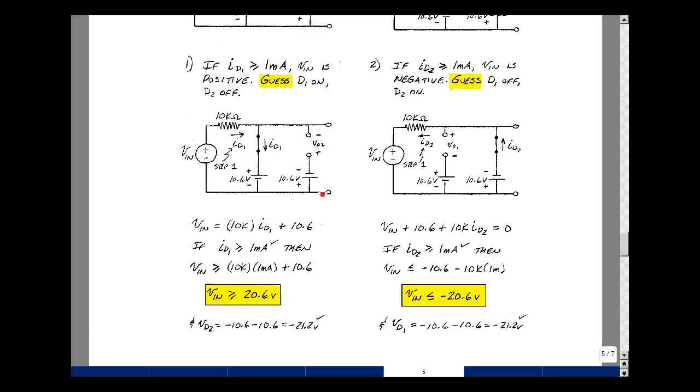Now we should check that diode 2 is off. Here's the rise in voltage. That would equal the drops of minus 10.6, minus 10.6, back to here. That's a negative 21.2, and that checks.